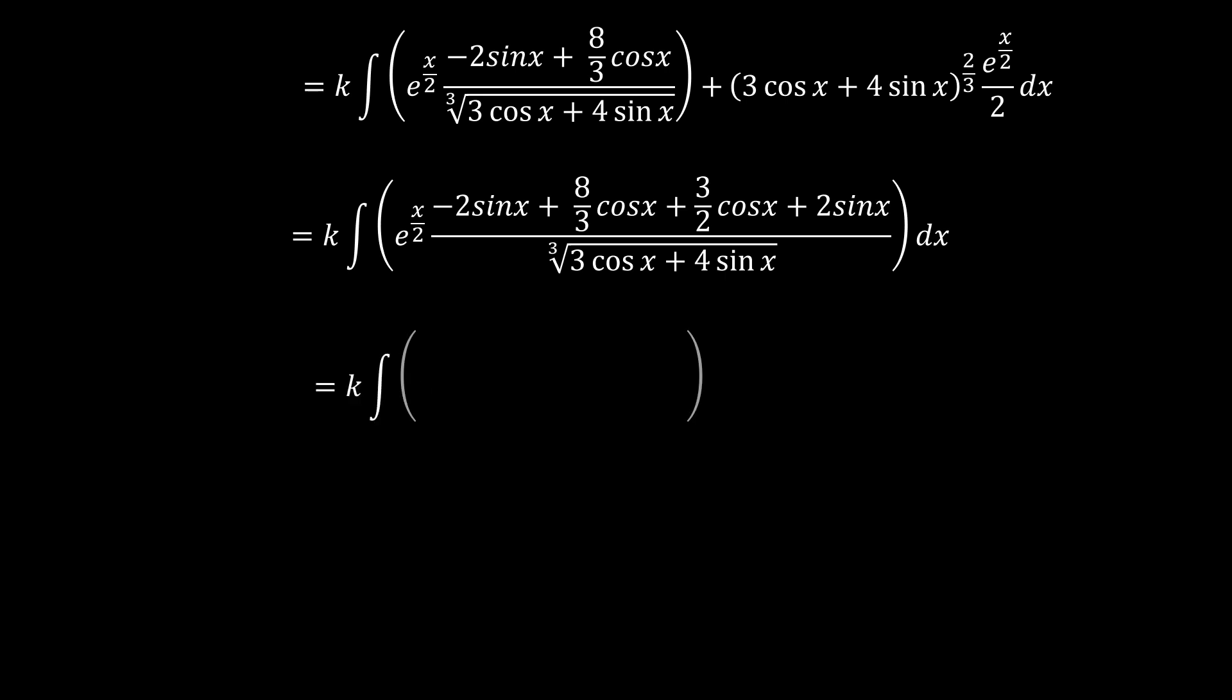So that becomes e to the power x over 2, 25 over 6 cosine x over the cube root of 3 cosine x plus 4 sine x.